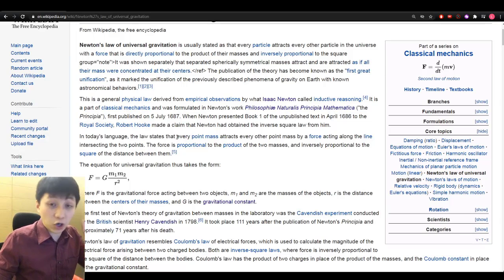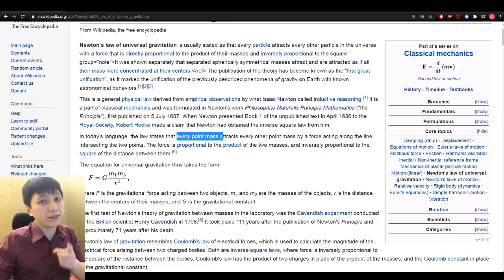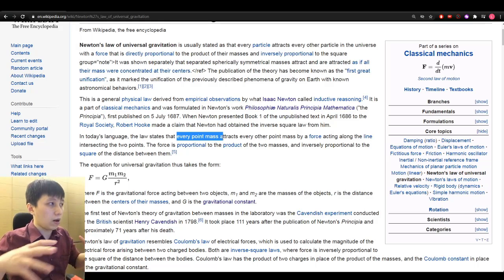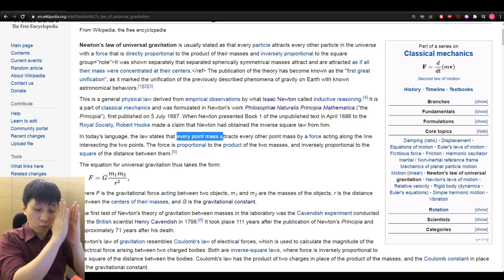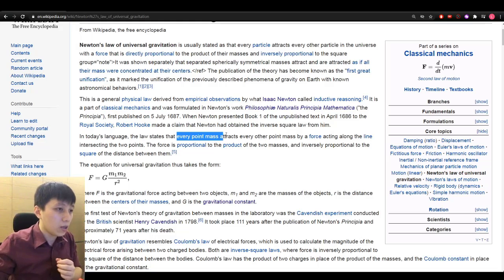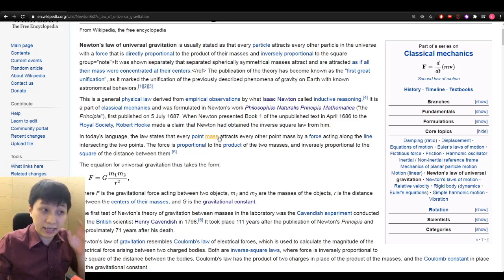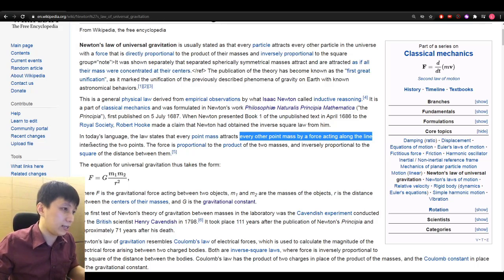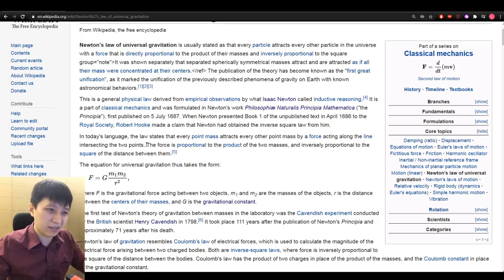So what you can say and copy down on your notes is this law will say for every point mass. Point mass is very important because when you treat the distance, we're talking about the center of mass of one to another from the center of mass. So we treat them as a point. Attract, it's an attraction force. So attract, this word is also very important. Every other point mass by a force acting along the line intersecting the two points. I think this part is still fine. This is optional maybe.